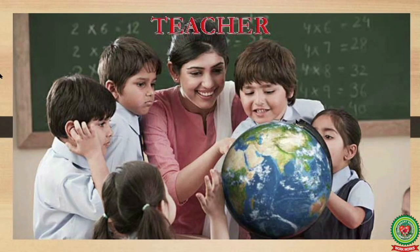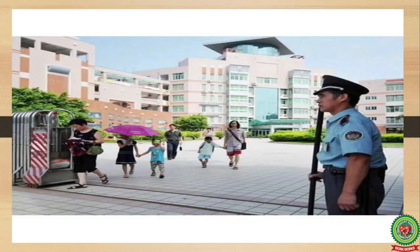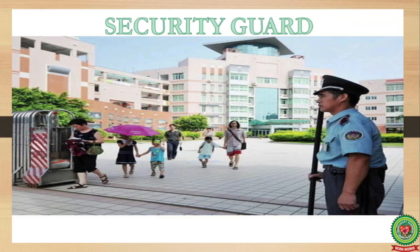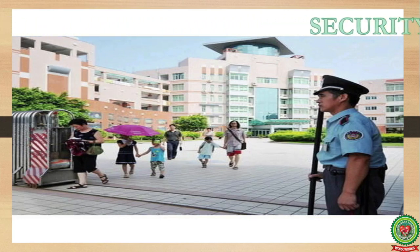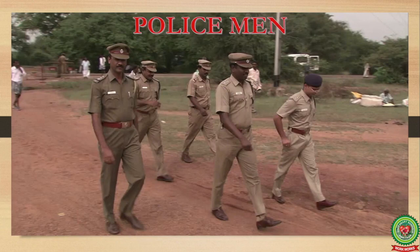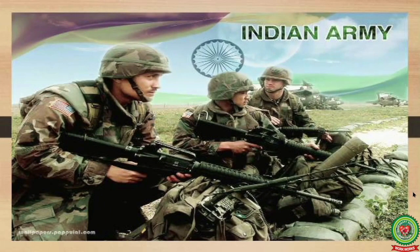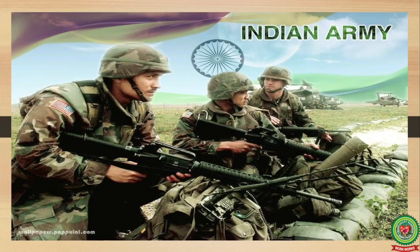A teacher is the future maker of a nation; a good teacher serves his country and society by giving better education to students. A newspaper hawker delivers newspapers door to door before we get up early in the morning. A security guard can guard a house, a society, an office, or a school. A policeman controls crime in our society and provides us a peaceful and protective society to live in. A soldier is the pride of the nation; he defends the honor of his motherland.